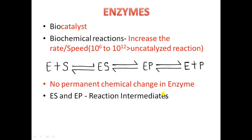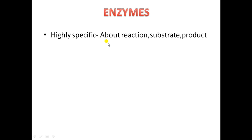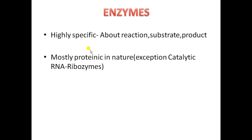Enzymes are highly specific about the type of reaction they bring about. For example, if you have an enzyme which converts A into B, it will always do that in a particular condition. They are highly specific about the reaction they catalyze, the substrate they act upon, and the product they form. Mostly enzymes are made up of proteins, but there are exceptions — for example, ribozymes, which are enzymes made of RNA molecules.